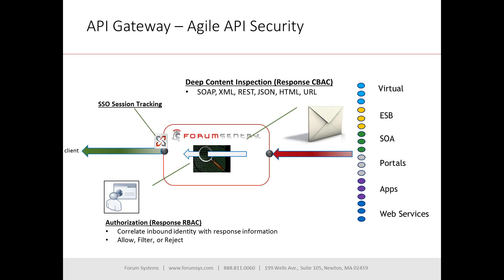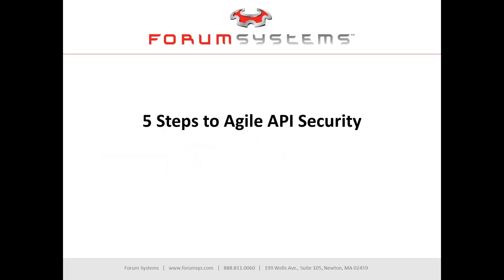Then ultimately comes into play the SSO session tracking. Once we get to that point and the user is valid, we go ahead and build a single sign-on token to enable that user to either access this service again without re-authentication, or access other services that have been federated with it. All of that foundationally gets us to the five-step process to achieve this notion of agile API security.